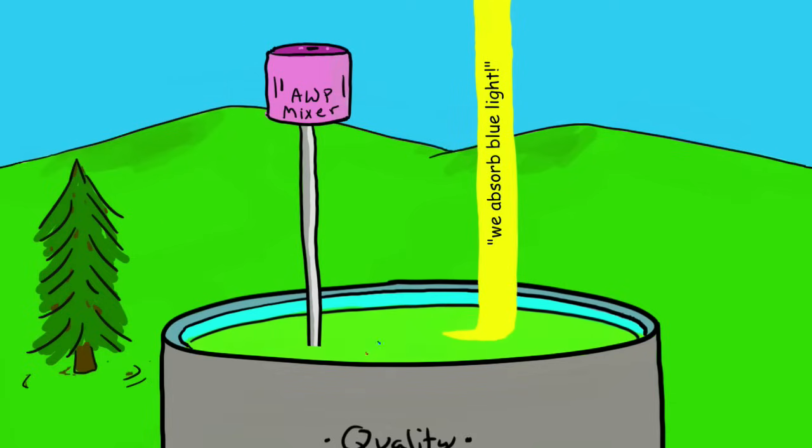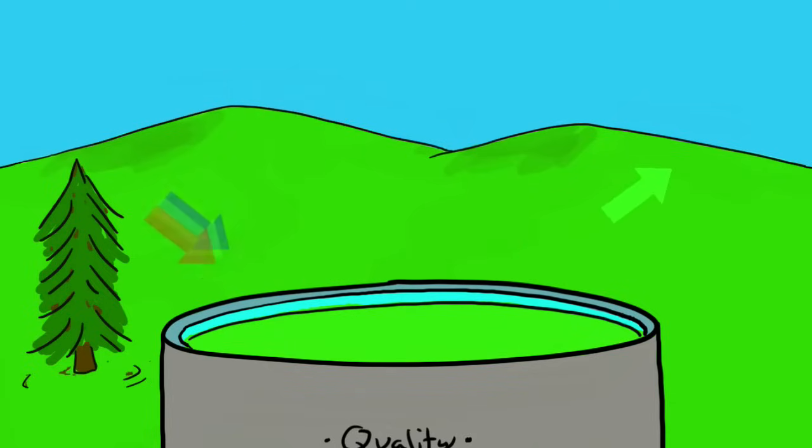All that remains is the green, which both cyan and yellow paint reflect. That's why a combination of cyan and yellow paints results in a green paint.